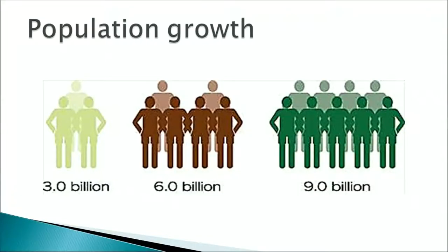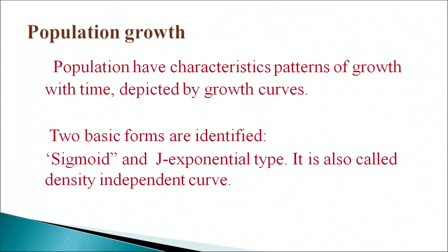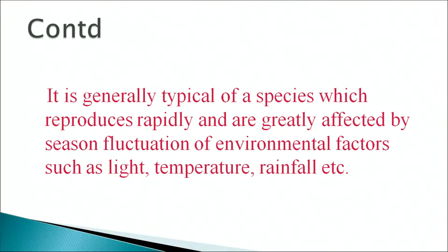This slide shows population growth from 3 billion to 6 billion to 9 billion. Populations have characteristic patterns of growth with time depicted by growth curves. Two basic forms are identified: sigmoid and J-shaped or exponential type. The J-shaped curve is also called the density-independent curve, typical of species that reproduce rapidly and are greatly affected by seasonal fluctuations of environmental factors such as light, temperature, and rainfall. This type shows rapidly increasing population density when there is abundant supply of resources, followed by sudden decline due to environmental factors. For example, insects show explosive growth during monsoon and then abruptly disappear at the end of the season.